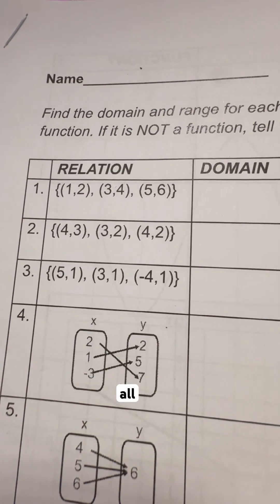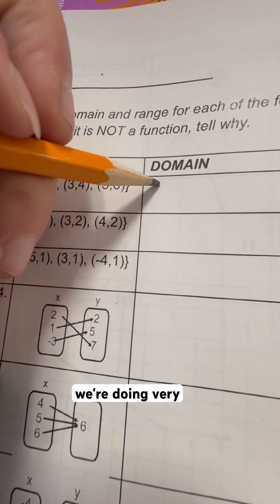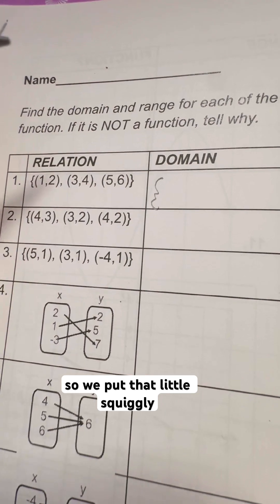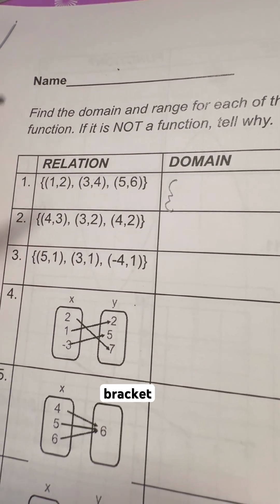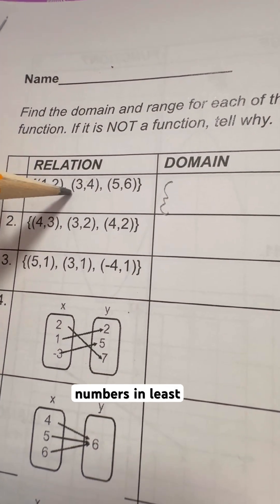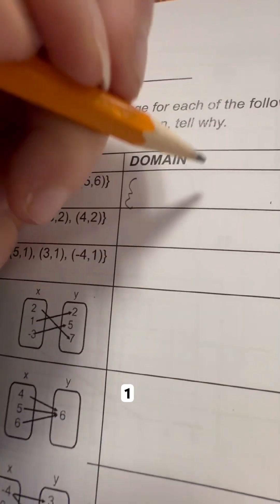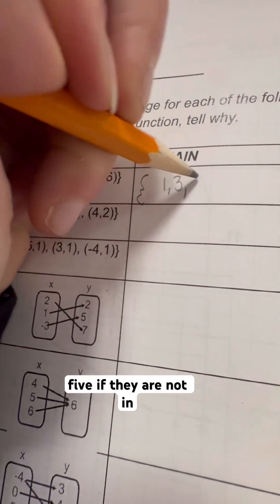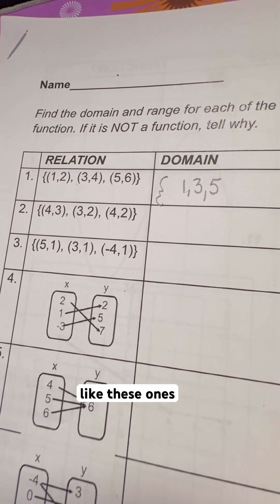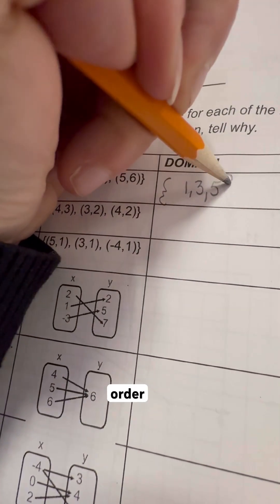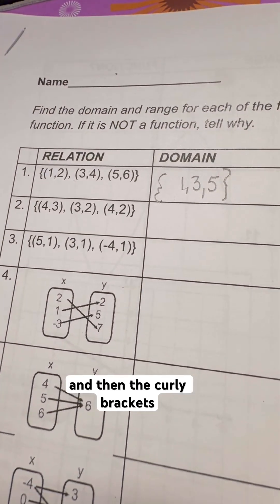Now we're doing domain. All we're going to do is we're doing very specific discrete numbers. So we put the little squiggly curly bracket and we just write the numbers in least to greatest order. 1, 3, and 5. If they are not in least to greatest order, like these ones happen to be, then you just put them in order. That's it. And then the curly brackets.